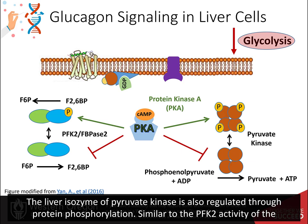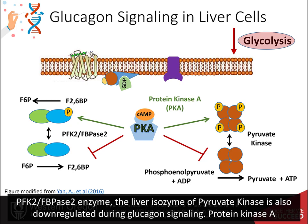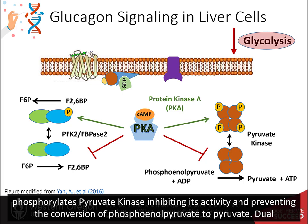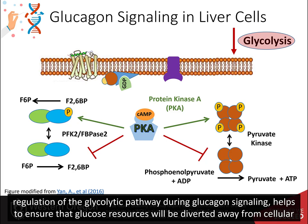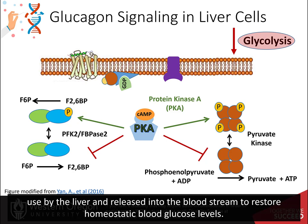The liver isozyme of pyruvate kinase is also regulated through protein phosphorylation, similar to the PFK2 activity of the PFK2-FBPase2 enzyme. The liver isozyme of pyruvate kinase is also down-regulated during glucagon signaling. Protein kinase A phosphorylates pyruvate kinase, inhibiting its activity and preventing the conversion of phosphoenolpyruvate to pyruvate. This dual regulation of the glycolytic pathway during glucagon signaling helps ensure that glucose resources will be diverted away from cellular use by the liver and released into the bloodstream to restore homeostatic blood glucose levels.